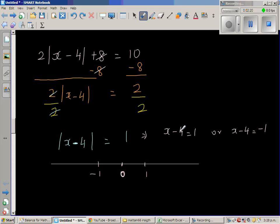So what take away 4 gives you 1? So this has to be 5. Or you add 4 to both sides, you get 5. And what take away 4 gives you negative 1? So 3 take away 4 gives you negative 1. So x is 3.